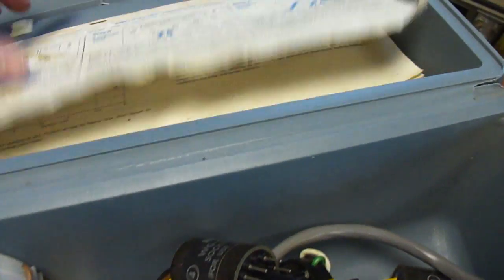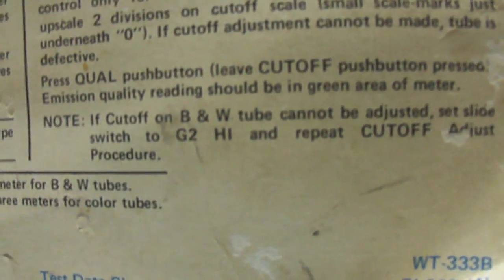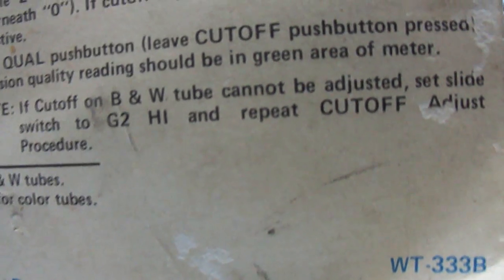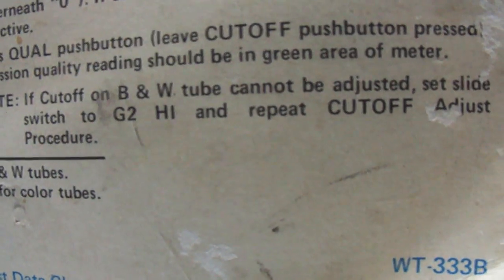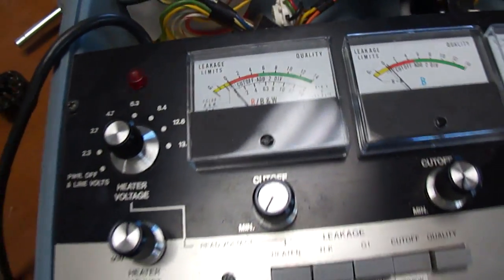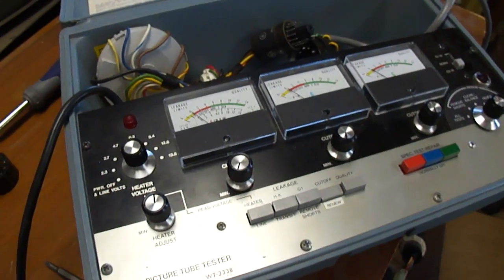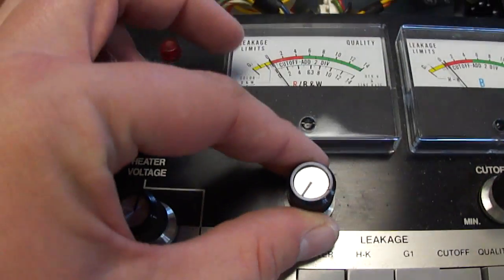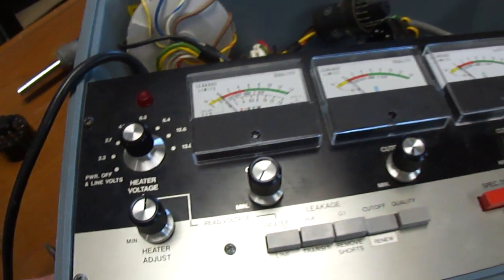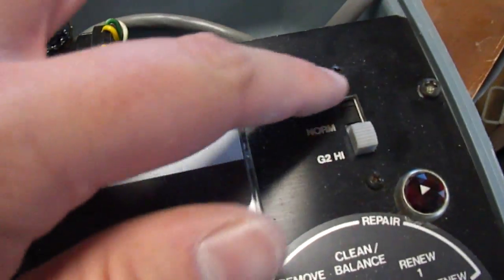One thing I noticed here is it says, if cutoff on black and white tube cannot be adjusted, set slide switch to G2 high and repeat cutoff adjustment procedure. When I first was testing this Magnavox CRT, I couldn't get the cutoff to set at all. It wouldn't produce any reading. So I set this to G2 high.